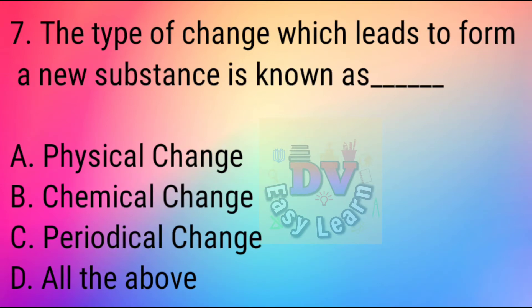Question No. 7: The type of change which leads to form a new substance is known as — (chemical change).